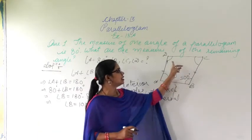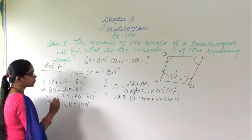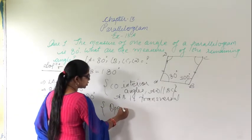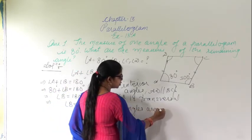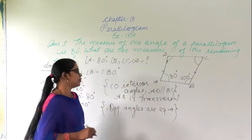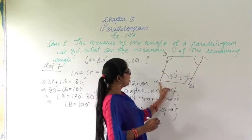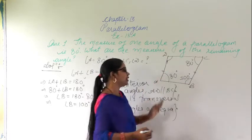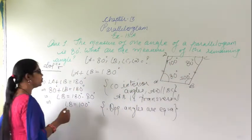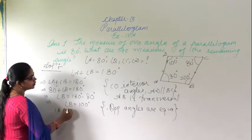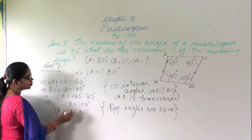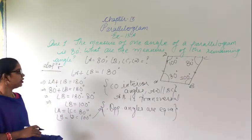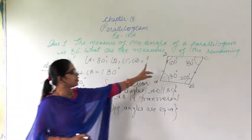Now we have to find angle C and angle D. In a parallelogram, opposite angles are equal. Angle A and angle C are opposite, so if angle A is 80 degrees, angle C is also 80 degrees. Similarly, angle B and angle D are opposite, so if angle B is 100 degrees, angle D is also 100 degrees. Therefore, angle A equals angle C equals 80 degrees, and angle B equals angle D equals 100 degrees.